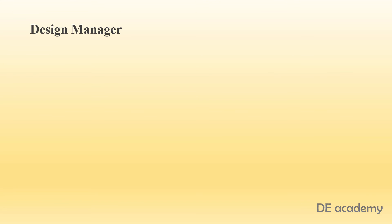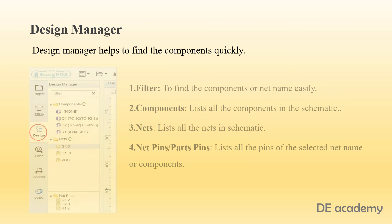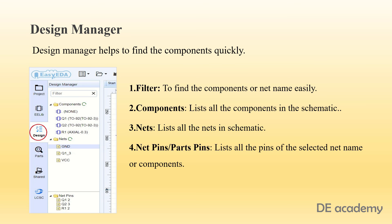With large schematics, it can be hard to find components quickly, and sometimes mistakes happen such as wiring to a wrong component pin. The design manager is very helpful in such situations. It consists of a few sections: a filter to find components or net names easily; a components section that lists all components in the schematic; nets, which lists all nets in the schematic; and net pins, which lists all pins of the selected net name or component.